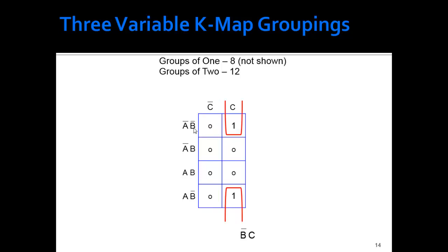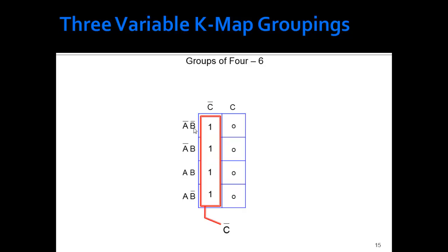Again, same thing. So remember that the corners are an option on K-Map groupings. So groups of four, there's a group of four, that would just be not C. You see, the bigger the group you get, the smaller the term is.